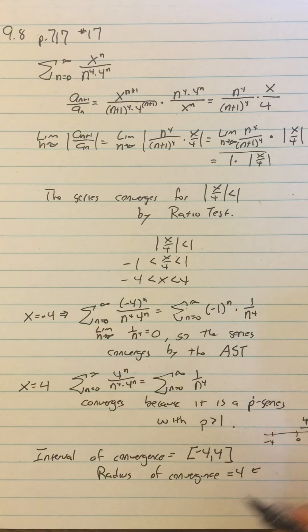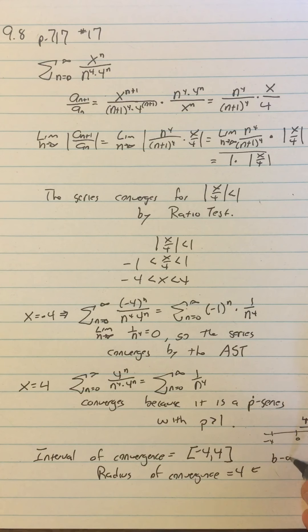You can also think, by the way, that that radius of convergence is b minus a over 2, where this is a and this is b, if you think more analytically than visually.